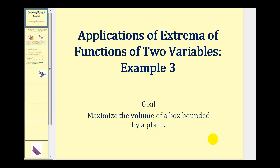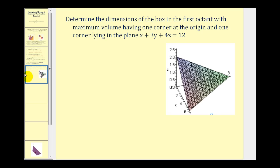Welcome to another example of the applications of extrema functions of two variables. The goal of this video is to maximize the volume of a box bounded by a plane. We want to determine the dimensions of a box in the first octant with the maximum volume, having one corner at the origin and one corner lying on the plane x plus 3y plus 4z equals 12.